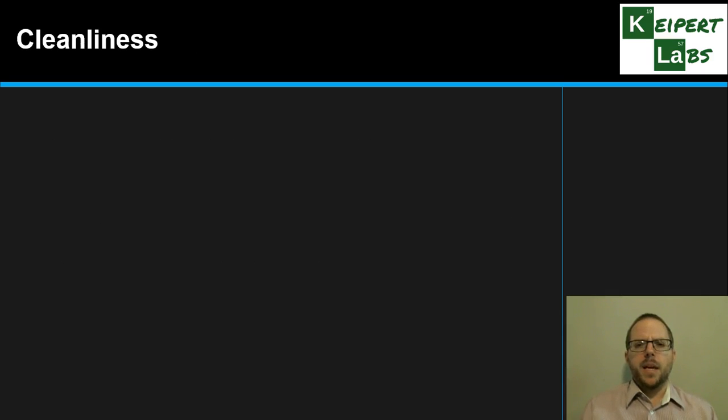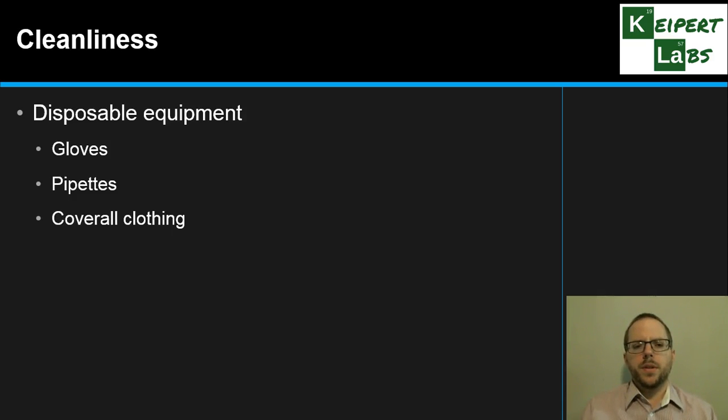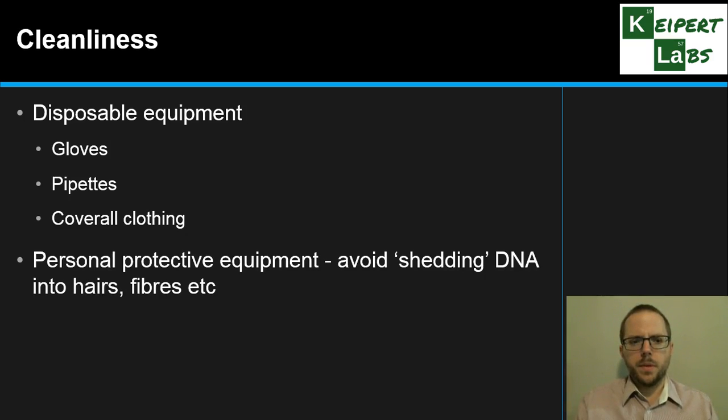Aside from sample storage, making sure we also are very clean in the way that we work. So using disposable equipment, whether it's gloves or pipettes, but when we're handling samples, covering all our own personal clothing so that trace evidence and items from us as the forensic scientists aren't transferred to the item in question. And also that trace evidence can be transferred in both ways. So we're not picking up any trace from the samples that we're testing, which may then be transferred onto other things later on. Making sure that we use all personal protective equipment and avoiding the chance of shedding any DNA into hairs and fibres.